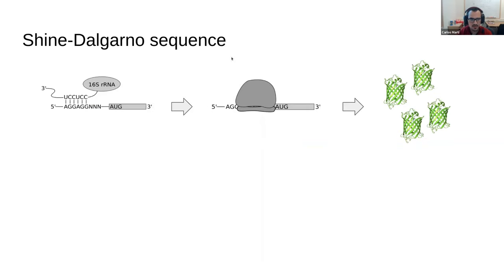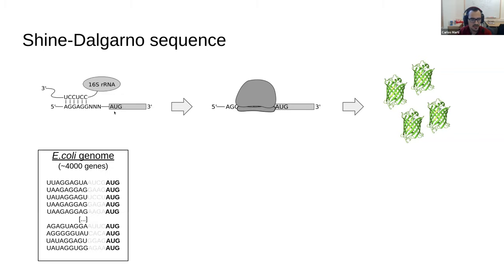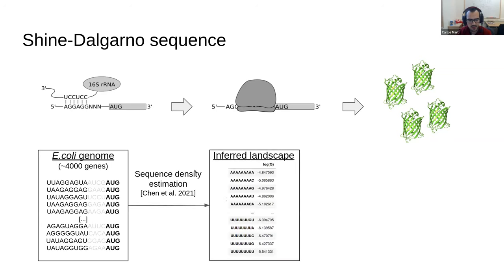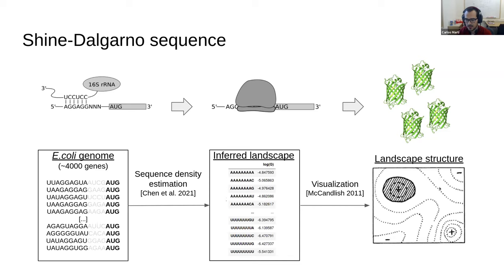I will start with the Shine-Dalgarno sequence, which is located in the 5' UTR of prokaryotic messenger RNAs. This sequence is recognized through base pair complementarity by the 16S ribosomal RNA, which mediates the assembly of the ribosome, making it a very important cis-regulatory element for protein translation. We approach this landscape by looking at the E. coli genome, which has about 4,000 genes, extract the sequences of their 5' UTRs, align them with respect to the start codon, extract these nine-nucleotide sequences, fit our sequence density estimation procedure to obtain a fitness estimate for each possible sequence, and then perform visualization.